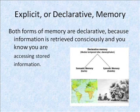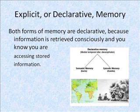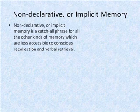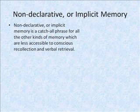As a result, both semantic memory and episodic memory are forms of declarative memory, because as you use them to retrieve information, you are aware that you are using this information. Non-declarative memory, otherwise known as implicit memory, is a catch-all phrase for all the other types of memory which are less accessible to conscious recollection and verbal retrieval.